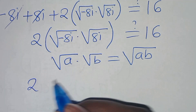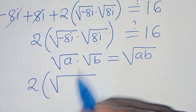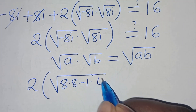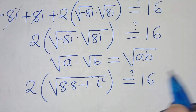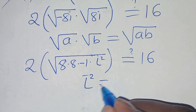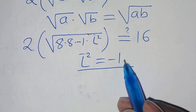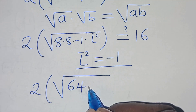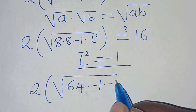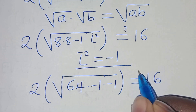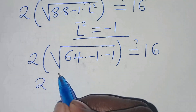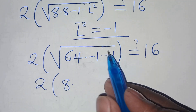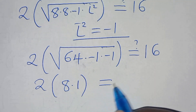Applying this identity: 2 times the square root of 8 times 8 times minus 1 times i² equals 16. Since i² equals minus 1, substituting gives 2 times the square root of 64 times minus 1 times minus 1. Since minus 1 times minus 1 equals 1, we get square root of 64 equals 8, and square root of 1 equals 1, giving 2 times 8 times 1 equals 16.